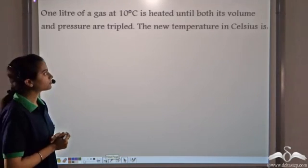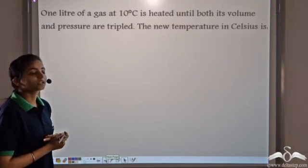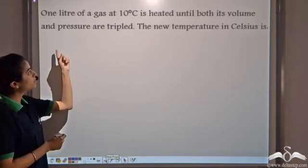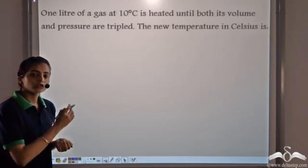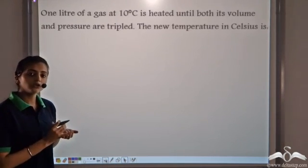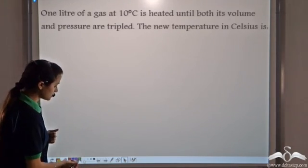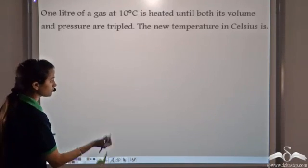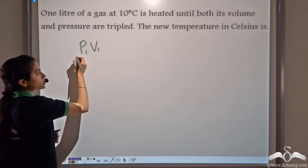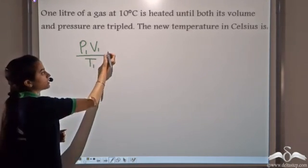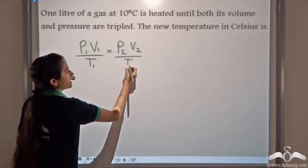Now let's solve a question: one litre of a gas at 10 degrees Celsius is heated until both its volume and pressure are tripled. We need to find the new temperature in Celsius. Since pressure, volume, and temperature all change, nothing is constant, so we use the gas equation: P1 times V1 divided by T1 equals P2 times V2 divided by T2.